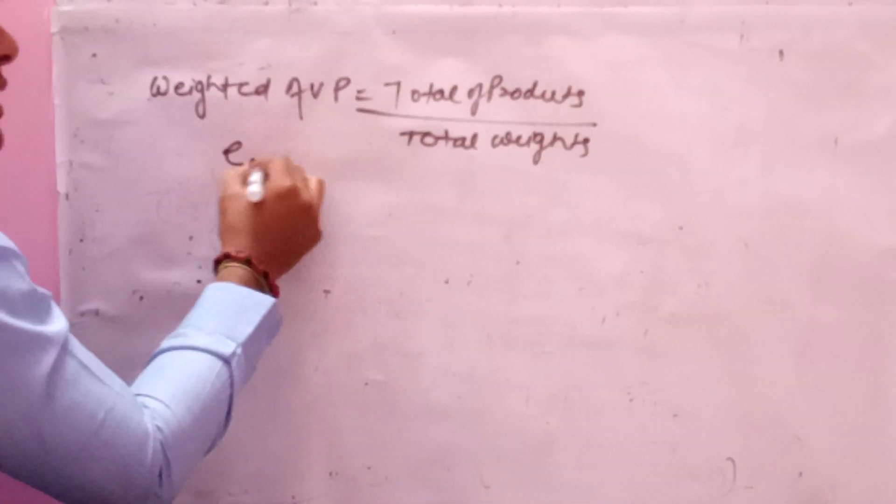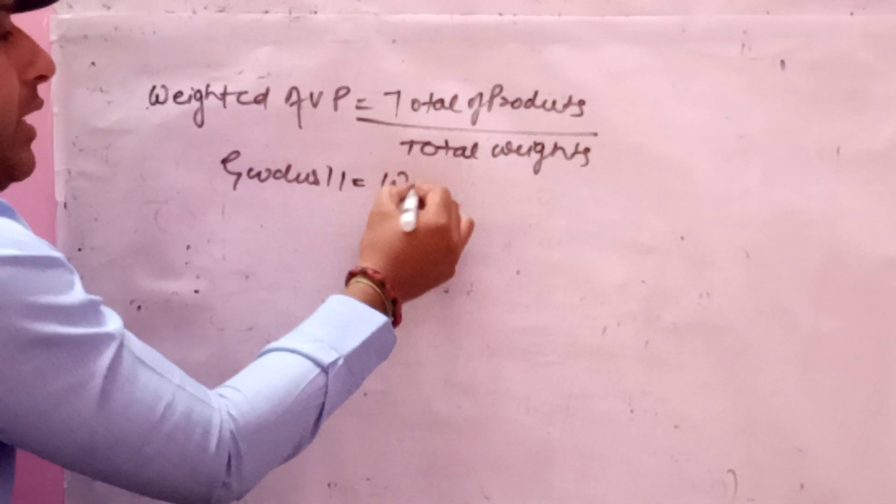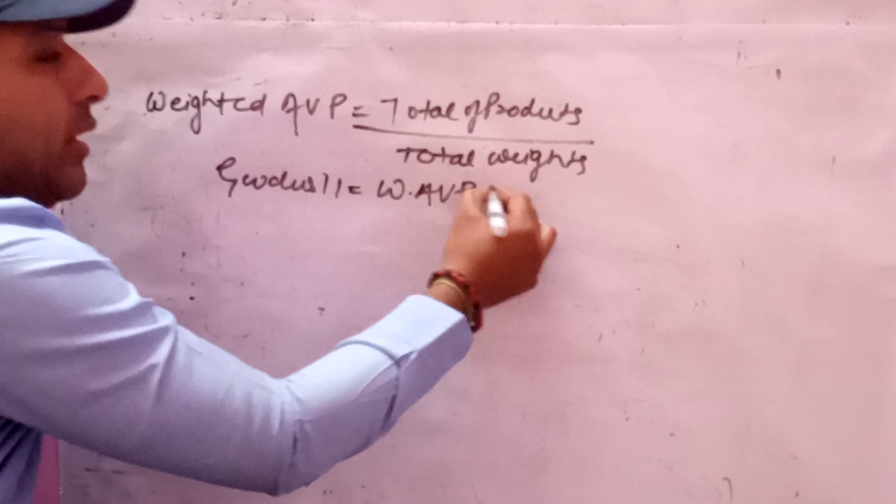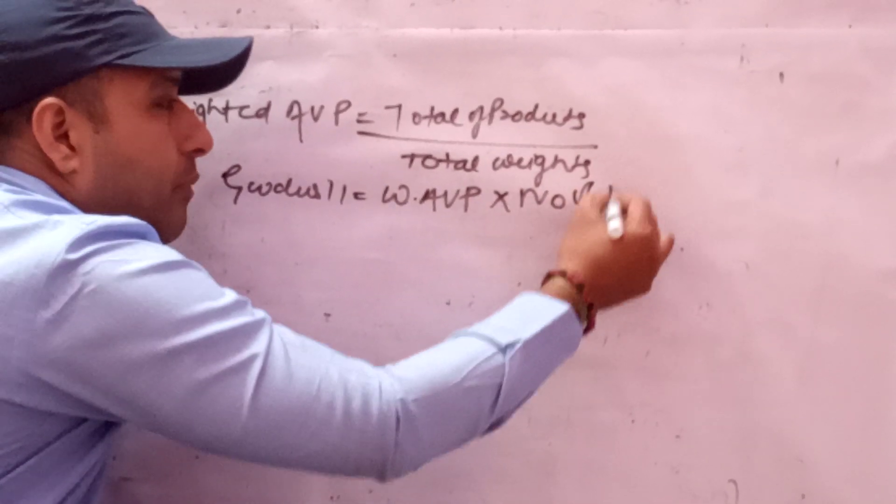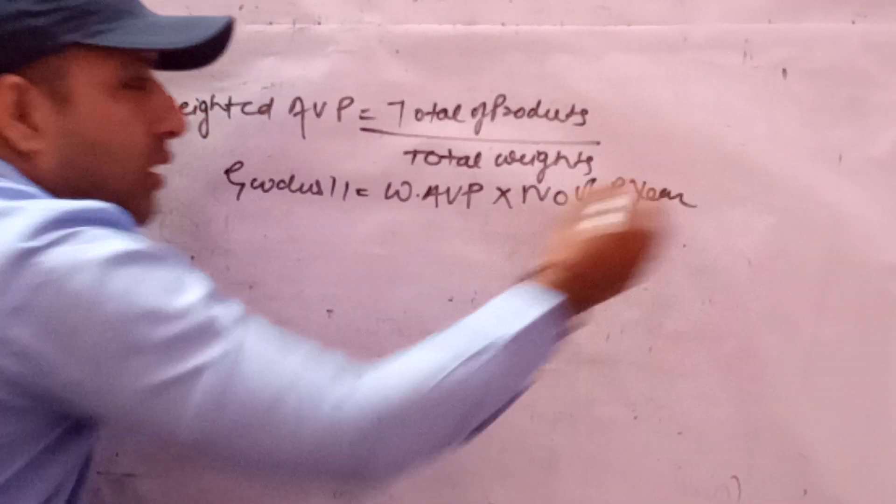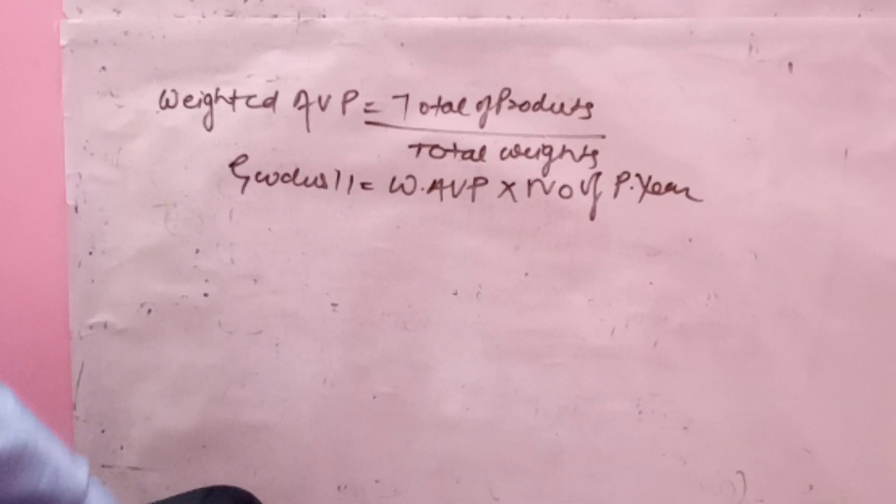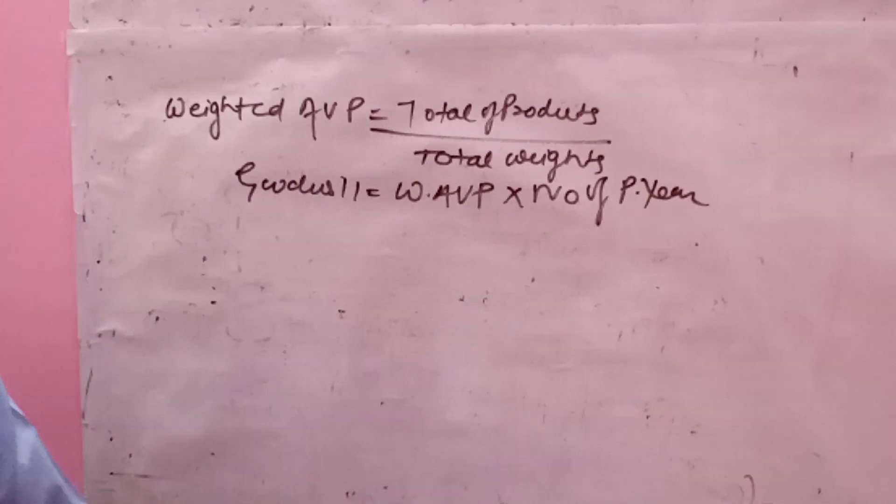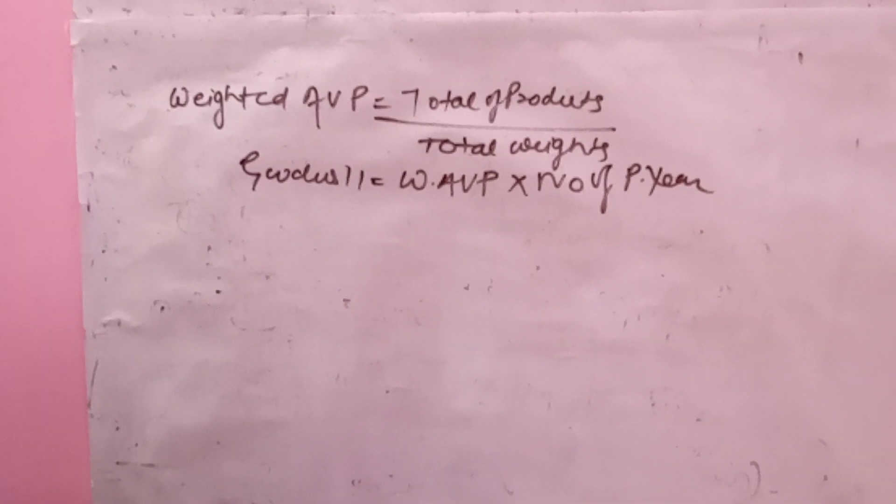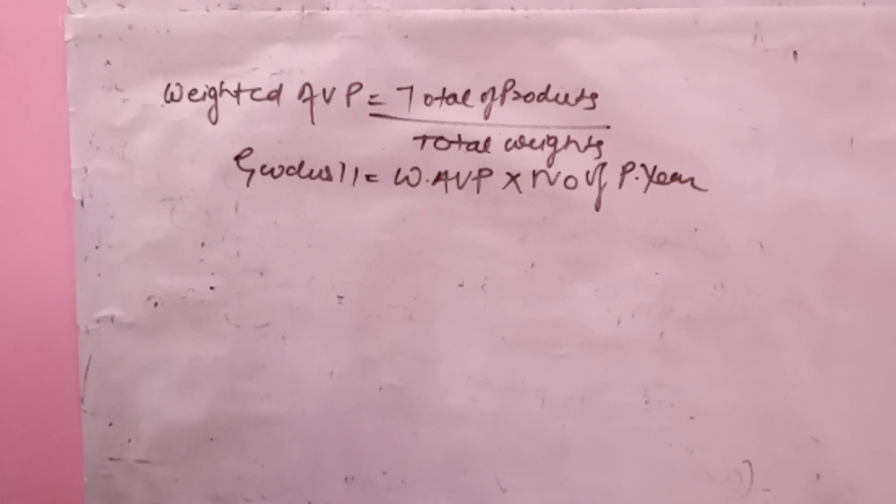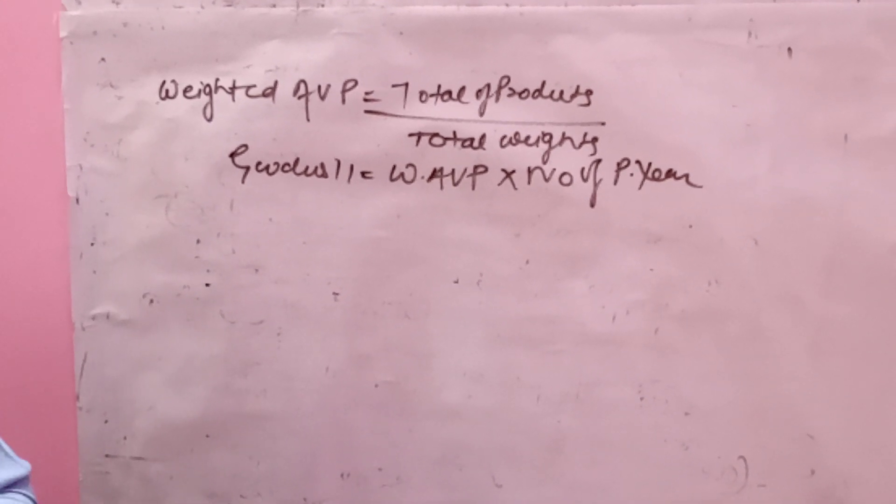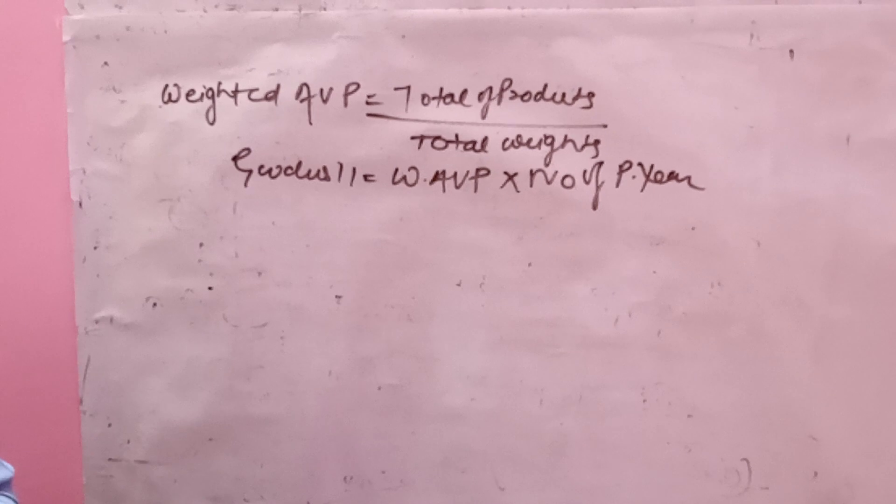Goodwill equals weighted average profit into number of purchase years. The next topic is weighted average profit. Illustration number 5 is very important and now I will solve question number 5.